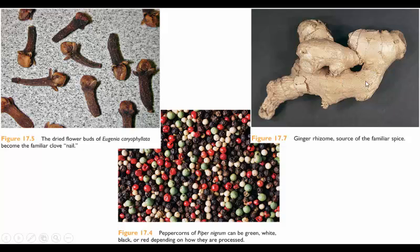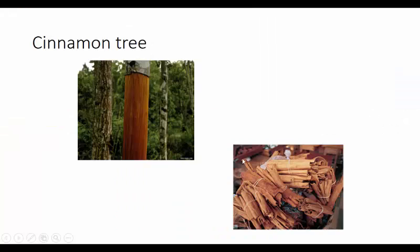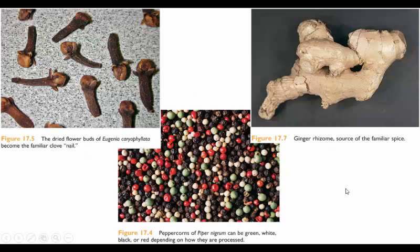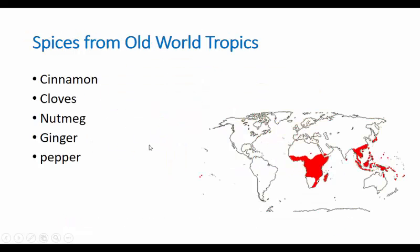Ginger is a root. Why is ginger called a spice instead of an herb? It probably has to do with how strong the flavor is — it's a hot flavor. Cinnamon also becomes hot to your mouth over time. So to some degree, spices were originally defined partly by their pungency. And those are your old world spices.